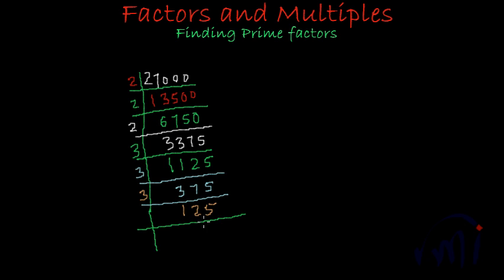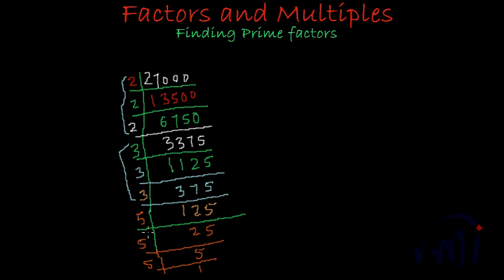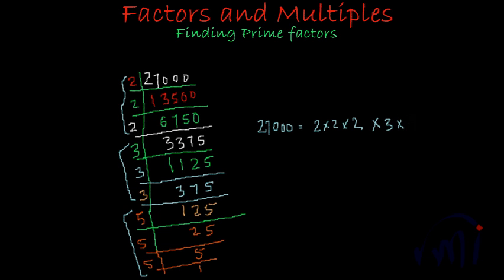Since 125 has 5 at the units place, it will be divisible by 5. Dividing by 5 gives 25, and dividing 25 by 5 gives 5, and dividing 5 by 5 gives 1. So the prime factors of 27,000 are 2 multiplied by 2 multiplied by 2 — three 2's — then 3 multiplied by 3 multiplied by 3 — three 3's — and then 5 multiplied by 5 multiplied by 5 — three 5's.